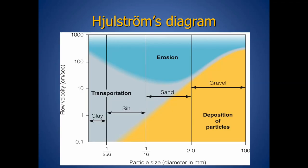If we want to know which process is occurring where, we use Hjulström's Diagram — a plot of stream velocity on the y-axis versus particle size on the x-axis. For example, with a particle size of two millimeters and a velocity of 10 centimeters per second, we'd be in the deposition zone. With smaller particles at one-256th of a millimeter and 10 centimeters per second velocity, erosion would be occurring. By plotting velocity versus particle size, we can determine where erosion, transportation, and deposition are each occurring in the channel.